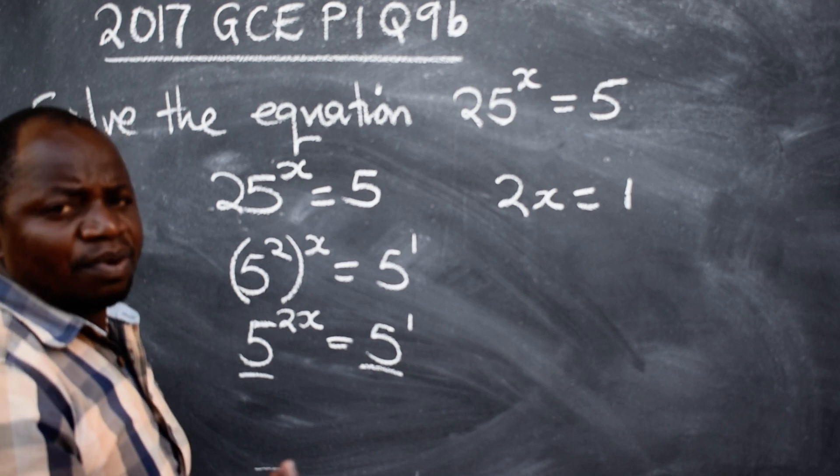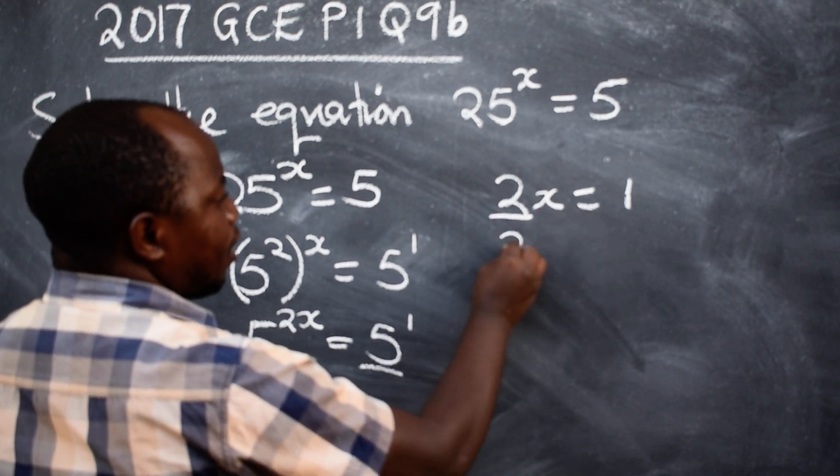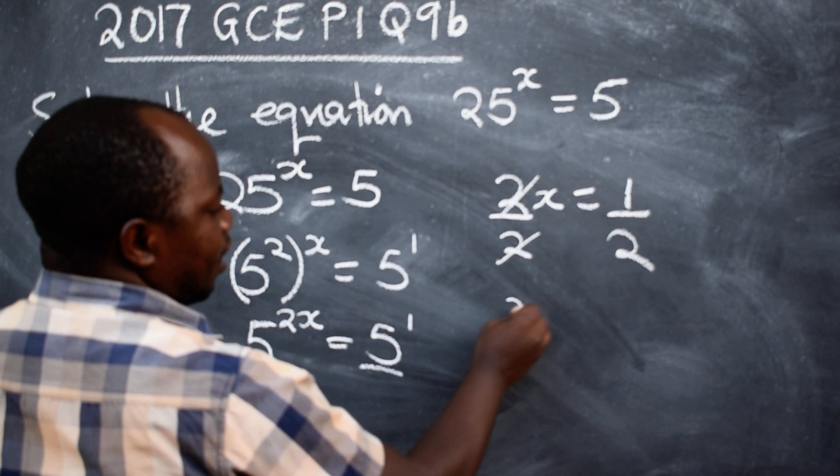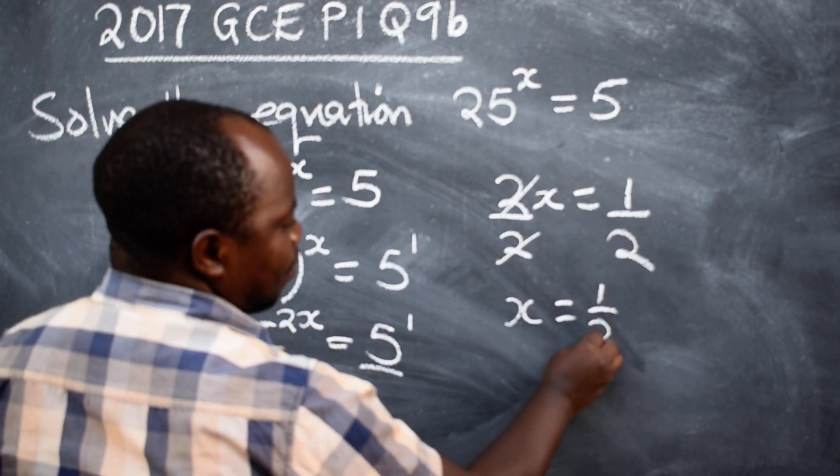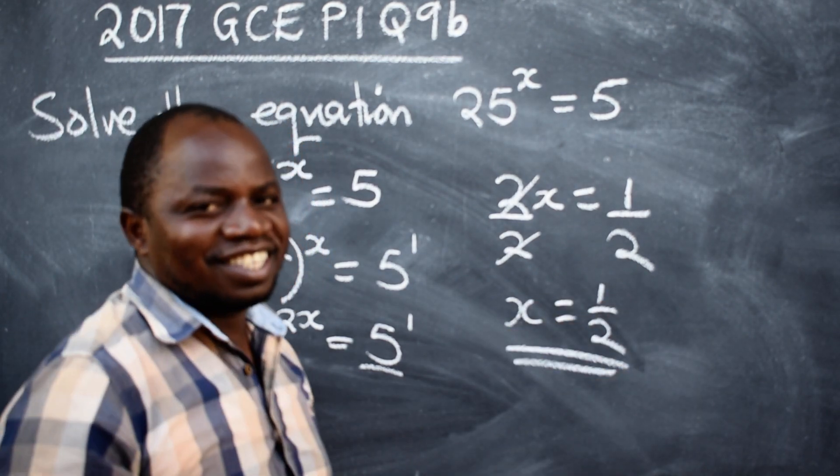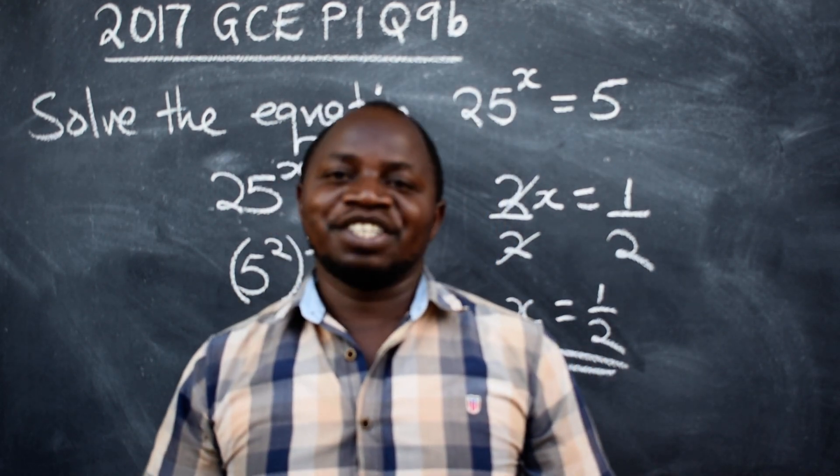To remain with x, what are we going to do? We divide by 2, divide by 2, cancel this. Now x will be equal to 1 over 2. And that is the way we should be able to solve such kind of questions.